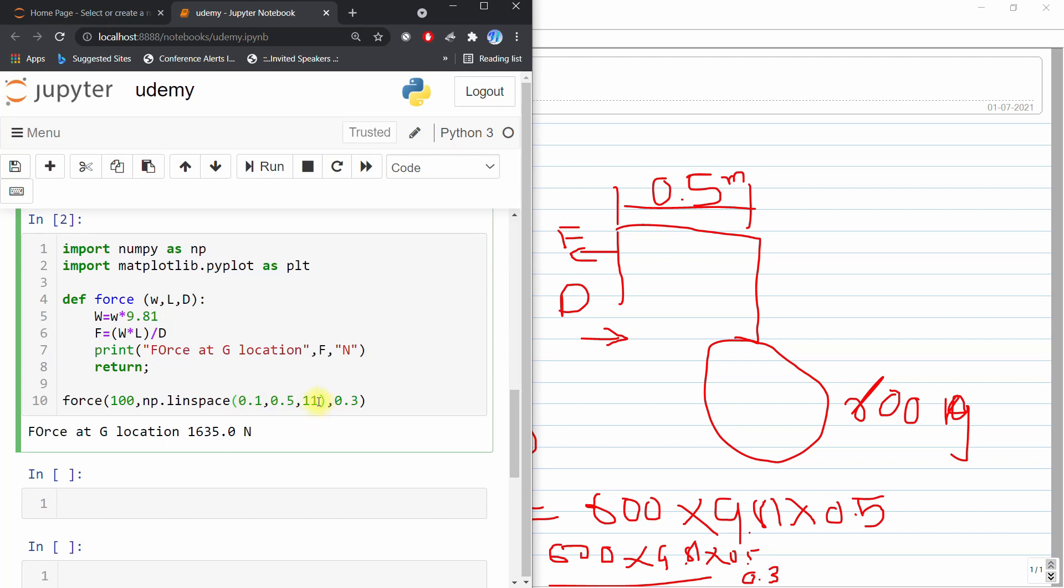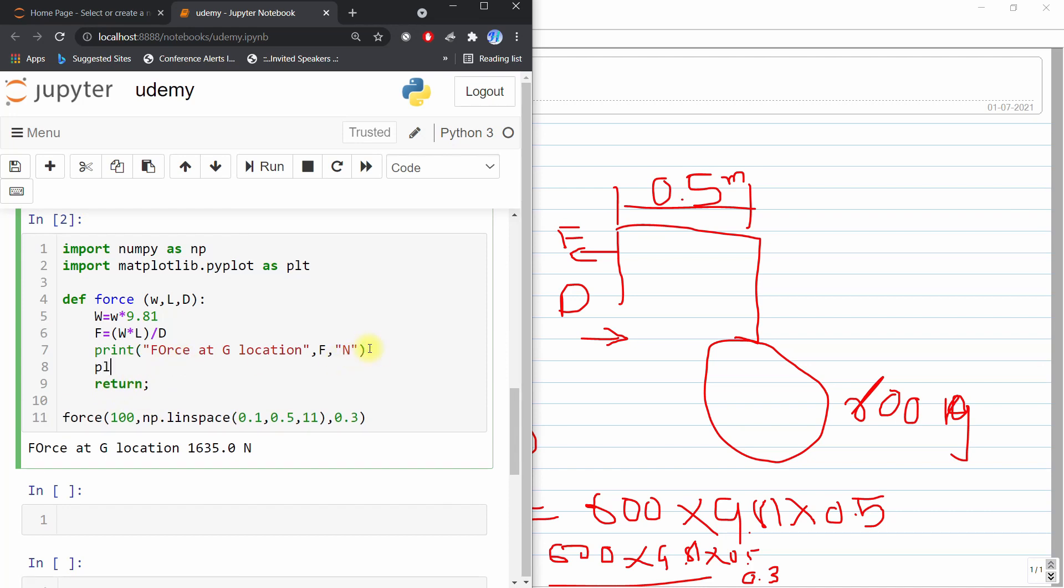So I will write as 11 parts and I will plt dot plot F versus F versus this L, and if I run the score.